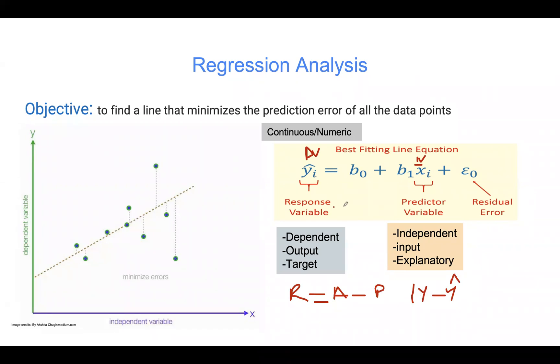Response variable here, basically, it's just a variable that we're trying to predict. In our predictor variable here, essentially, this is just a variable that we use to predict the response variable. Something just to keep in mind is that we can say X here predicts Y, but we cannot say that X causes Y.